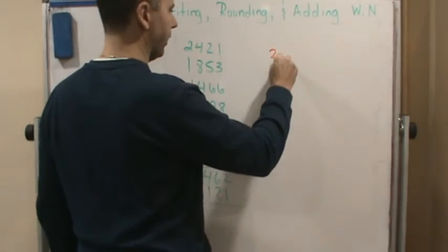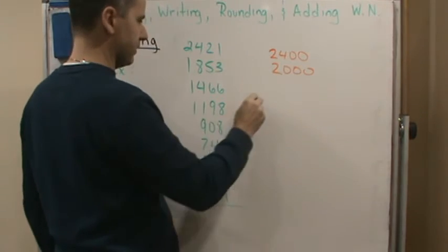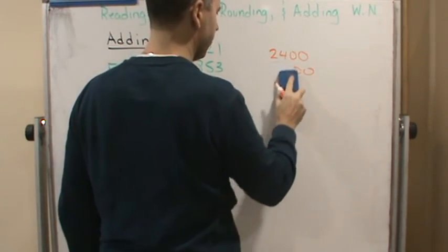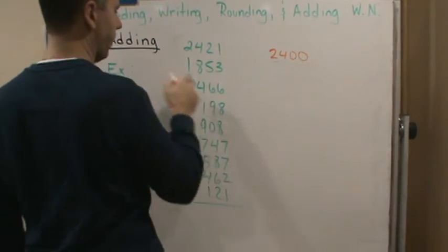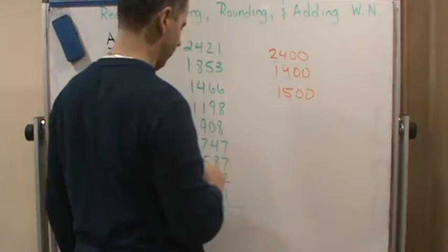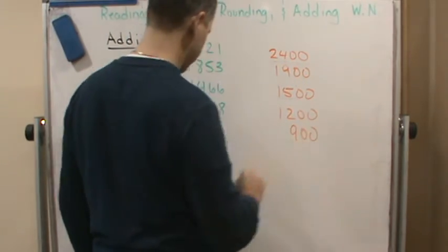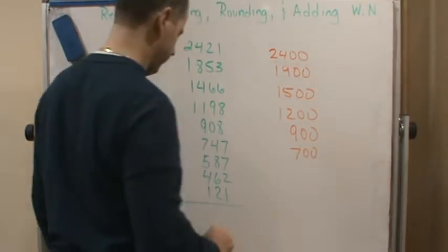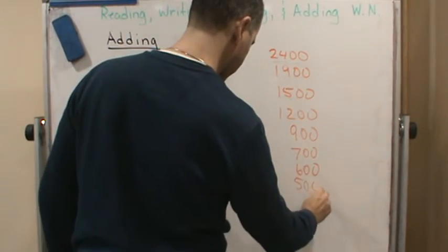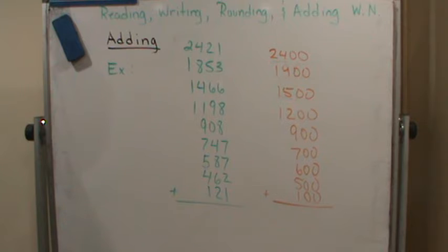So this is going to give me 2400. This is going to give me 1900. This will give me 1500, this will give me 1200, this will give me 900, this will give me 700, 600, 500, and 100. So if I add all of these up, I'm going to get what?